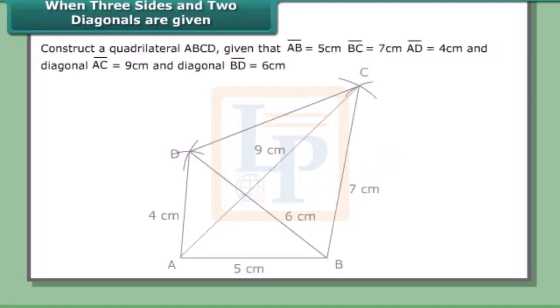When 3 sides and 2 diagonals are given, construct quadrilateral ABCD given that AB = 5 cm, BC = 7 cm, AD = 4 cm, diagonal AC = 9 cm, and diagonal BD = 6 cm.